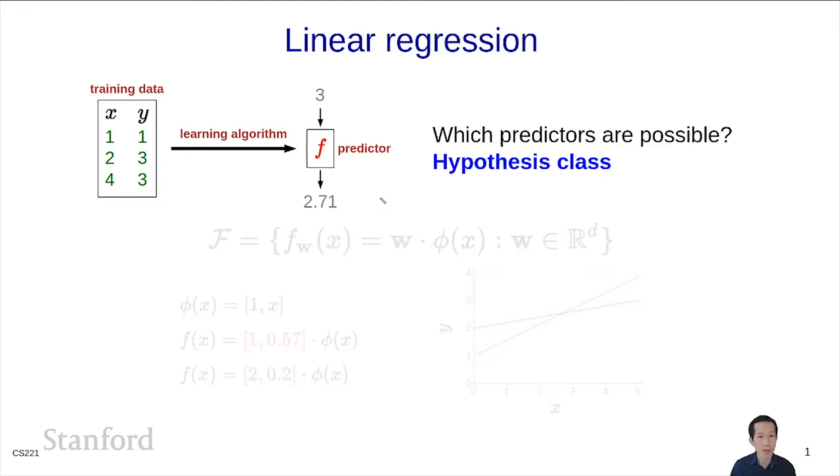For linear predictors, remember that the hypothesis class is defined to be the set of all predictors f(x) equals some weight vector dot some feature vector φ(x). And we allow the weight vector to range freely over all d-dimensional real vectors.